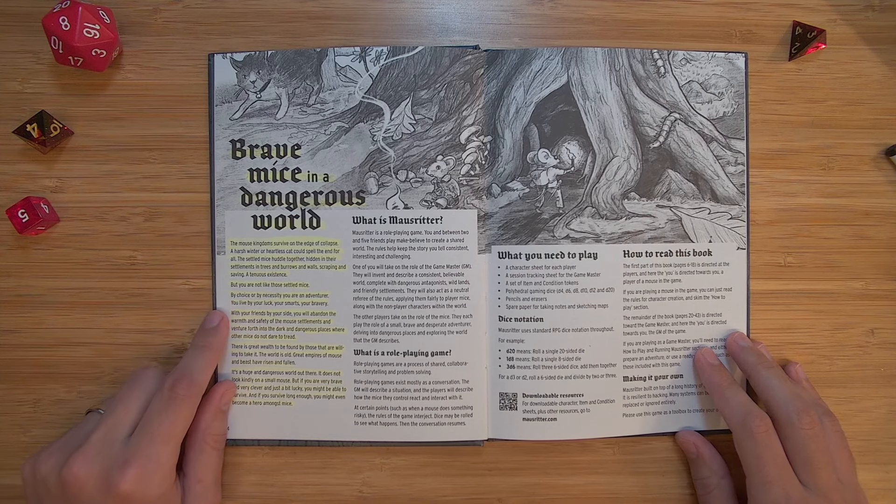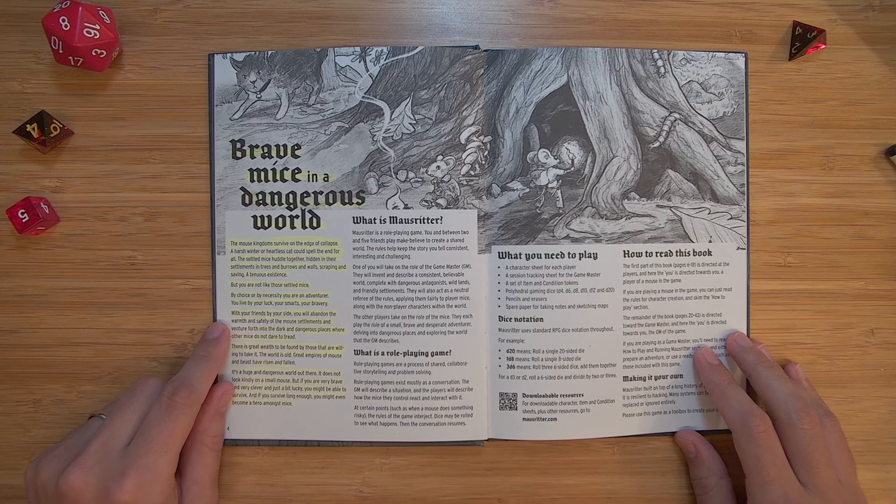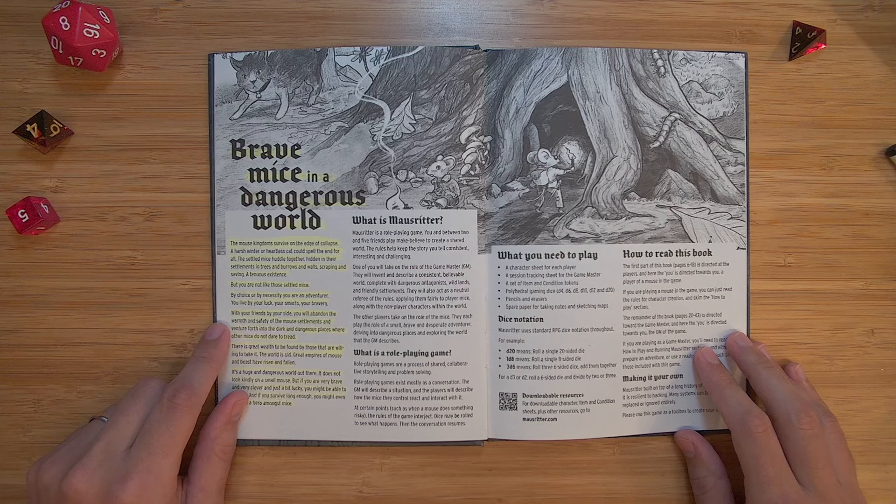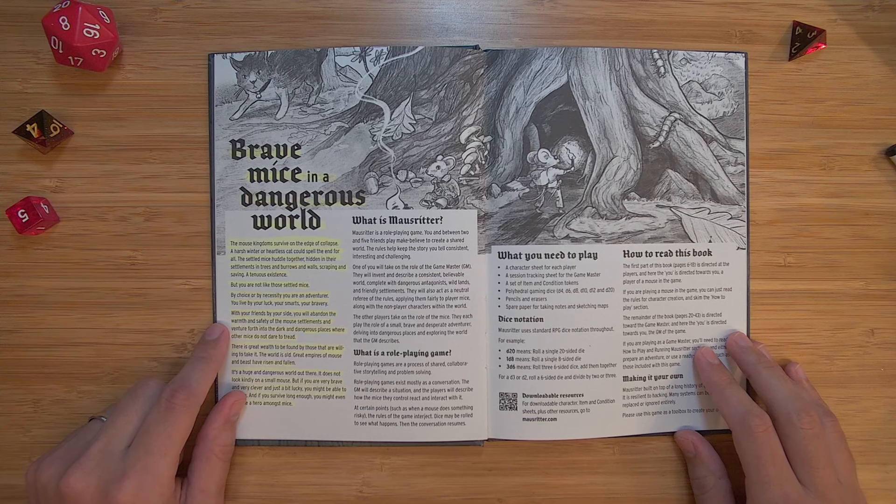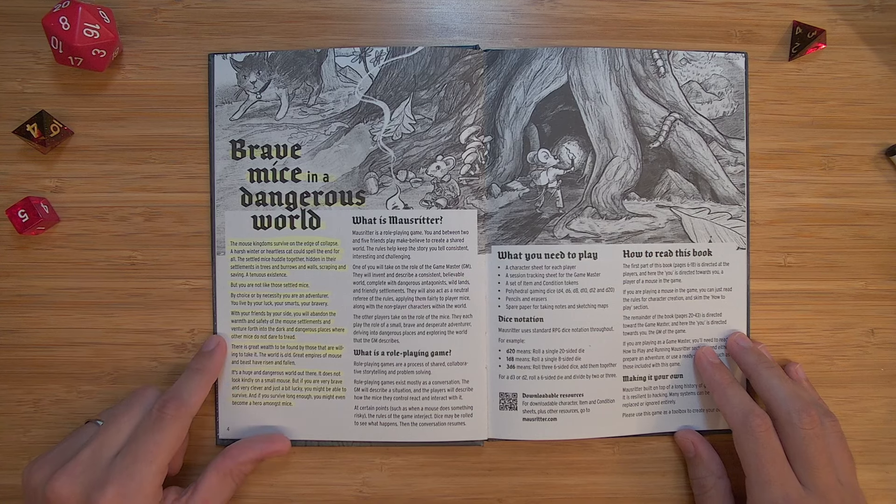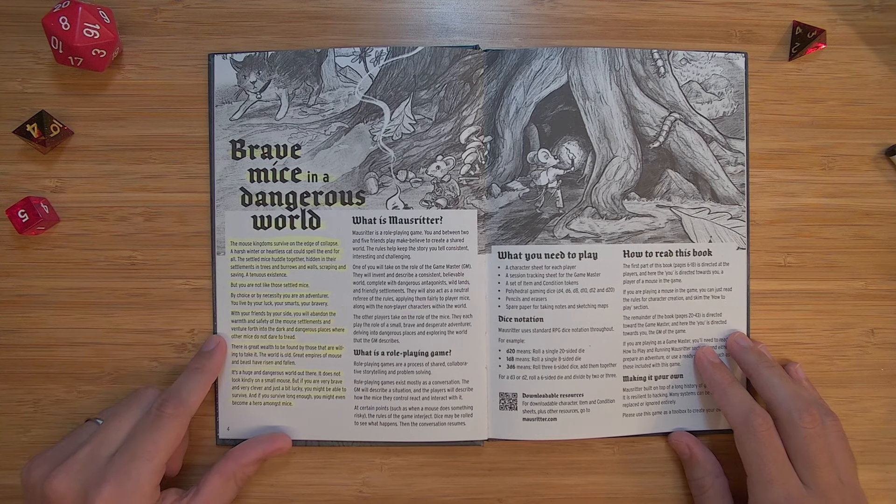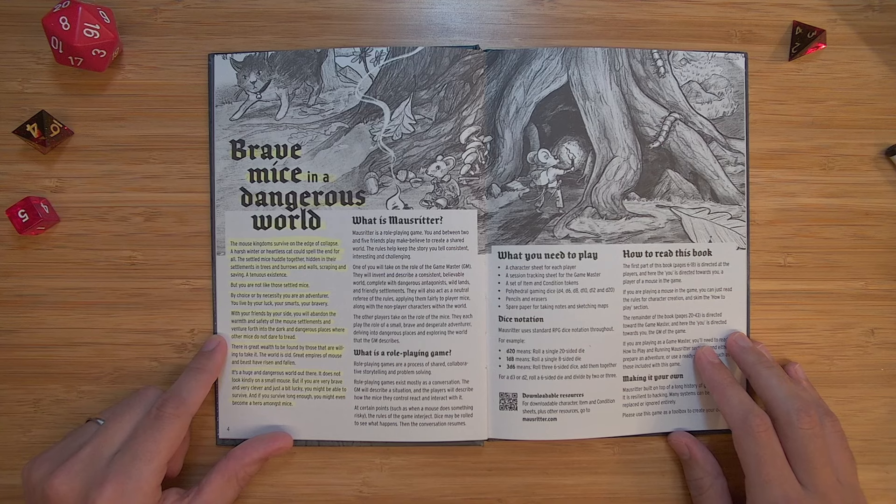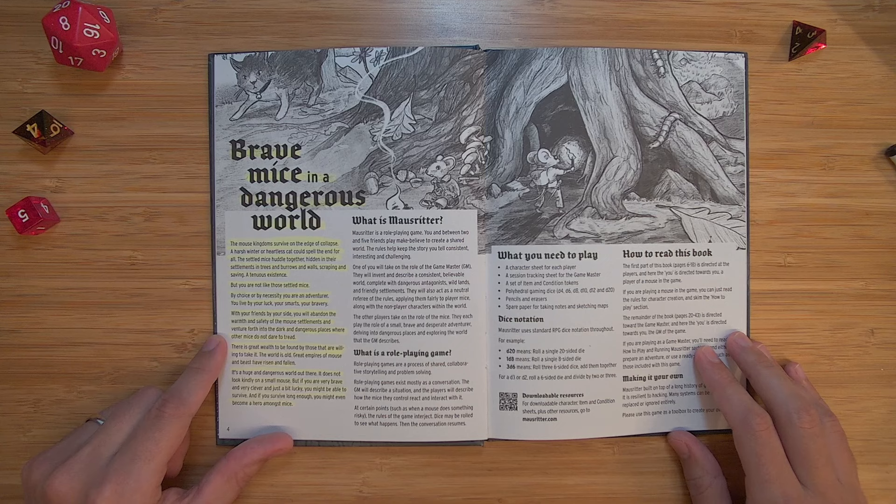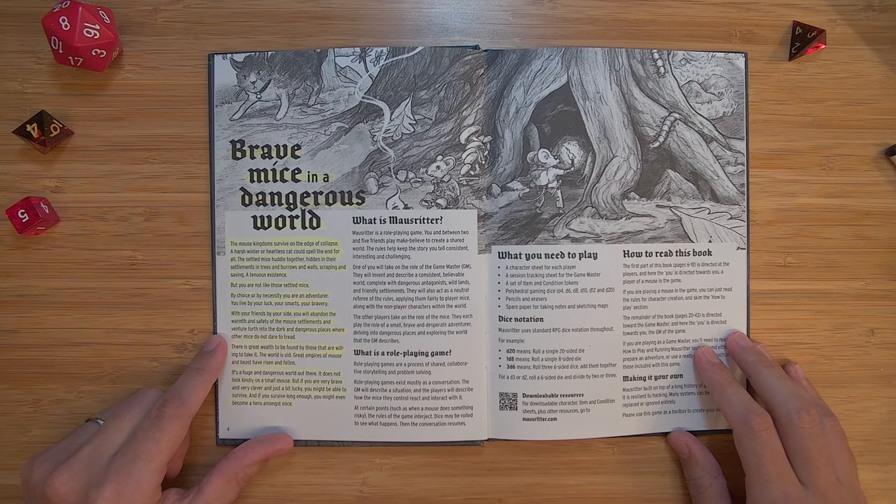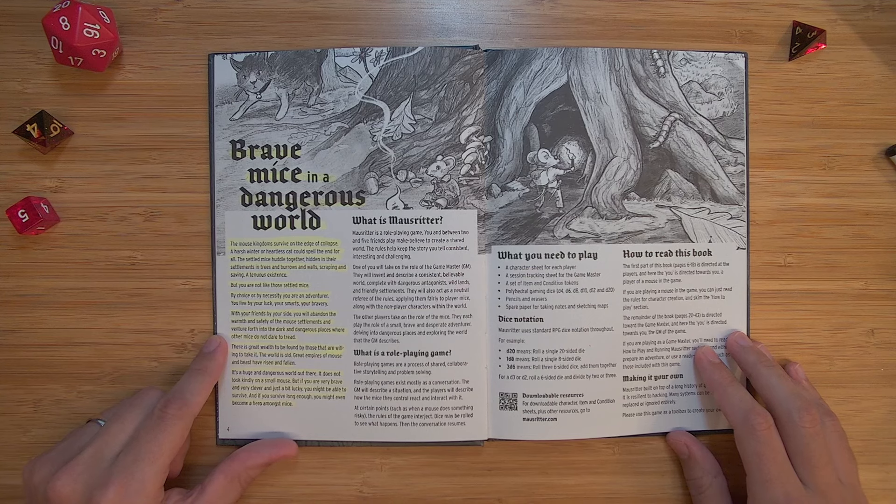By choice or by necessity, you are an adventurer. You live by your luck, your smarts, your bravery. With your friends by your side, you will abandon the warmth and safety of the mouse settlements and venture forth into the dark and dangerous places where other mice do not dare to tread. There is great wealth to be found by those that are willing to take it. The world is old. Great empires of mouse and beast have risen and fallen. It's a huge and dangerous world out there. But if you are very brave and very clever and just a bit lucky, you may be able to survive. And if you survive long enough, you might even become a hero among mice.